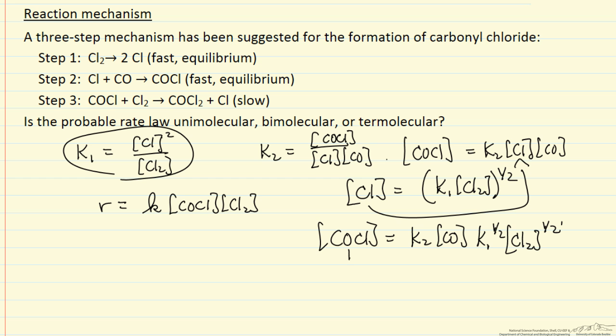So I can substitute this back into the rate law and express the rate in terms of measurable concentrations: K times K2 times K1 to the one half, and then the concentration of CO, and the concentration of chlorine to the first power plus one half, so three halves.